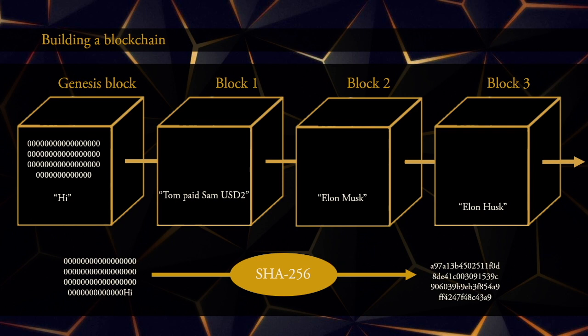The next step is to compute the hash of the first block. This is done by putting all of the content of the first block into a single text string and then computing the hash of that. As you can see, the result becomes A97, A13, and so on, ending with 3A9. The next step is to take the hash of the Genesis block that we just computed and put that into block number one. Having done that, these two blocks are now linked.